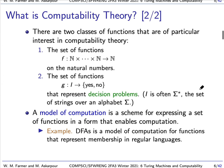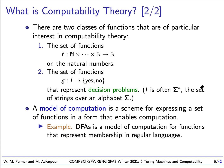In computability theory we're considering which functions are computable, but often our interest is focused on two kinds of functions. The first set are functions that take a certain number of natural number inputs and return a natural number. The second set are functions that take some input and give back yes or no. These represent decision problems — a decision problem is a problem where we ask whether something belongs to a subset: if so, we get yes; if not, we get no.